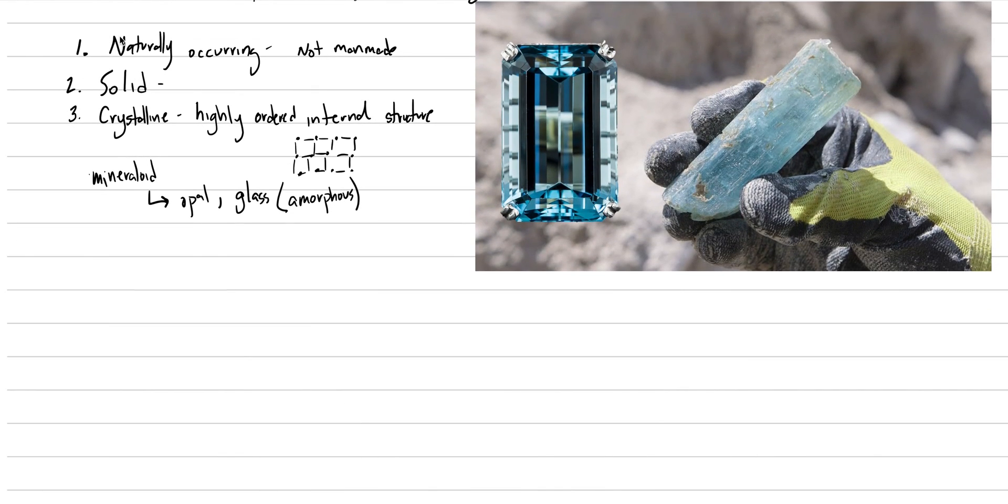The next part of our definition to get into, part number four, maybe this is a little longer to write down, but this is definite homogenous chemical composition. The atoms that occur within this mineral are always and homogeneously the same. Now there is some variability within certain limits, but let's just put an example here.